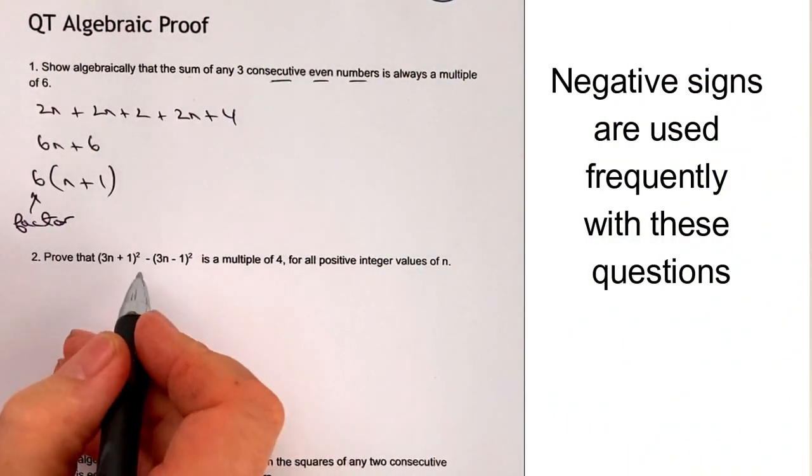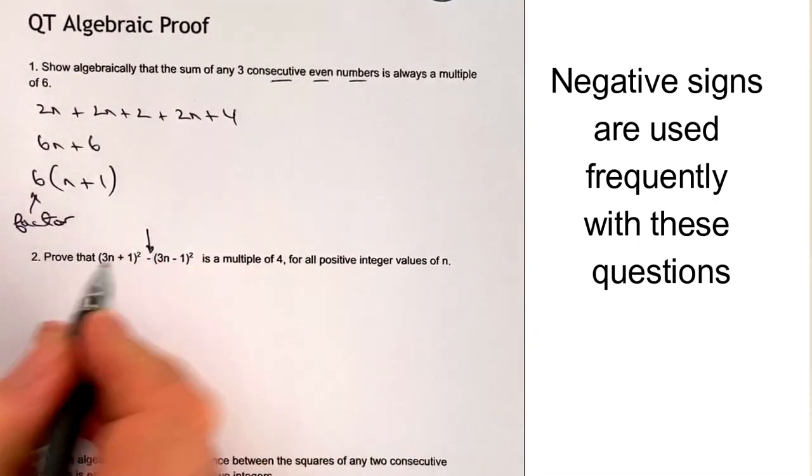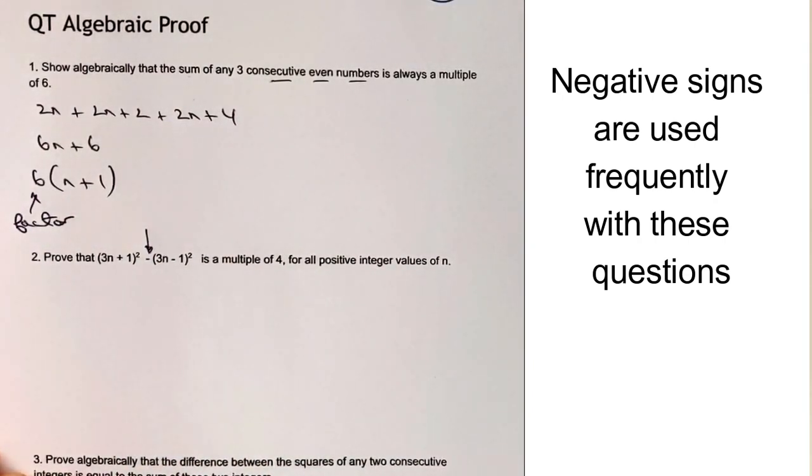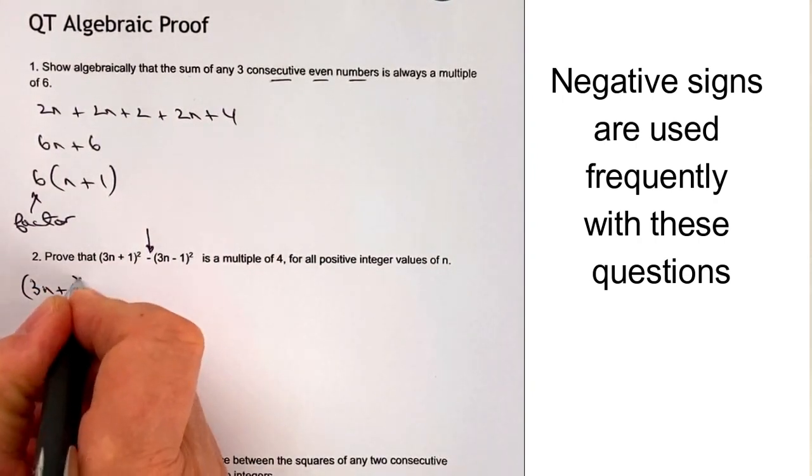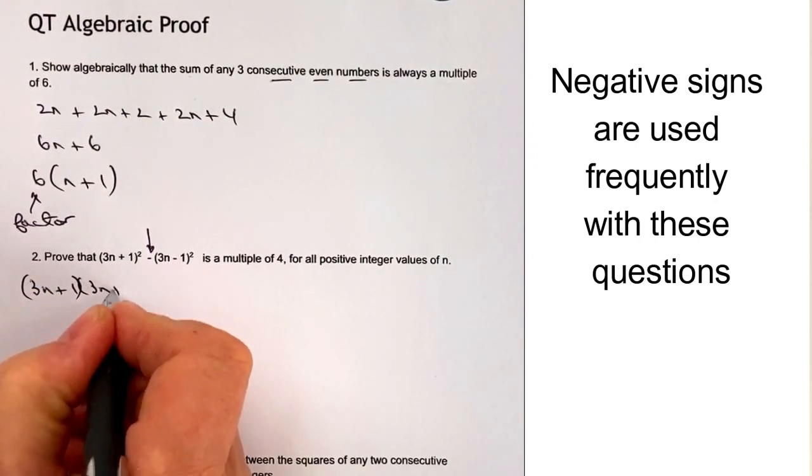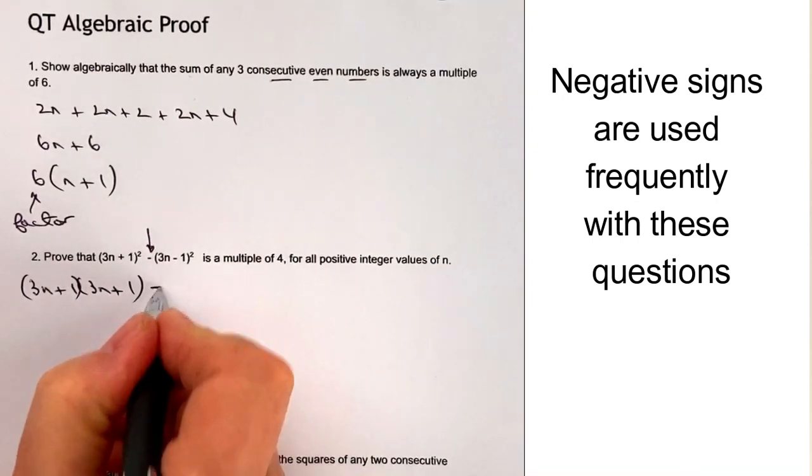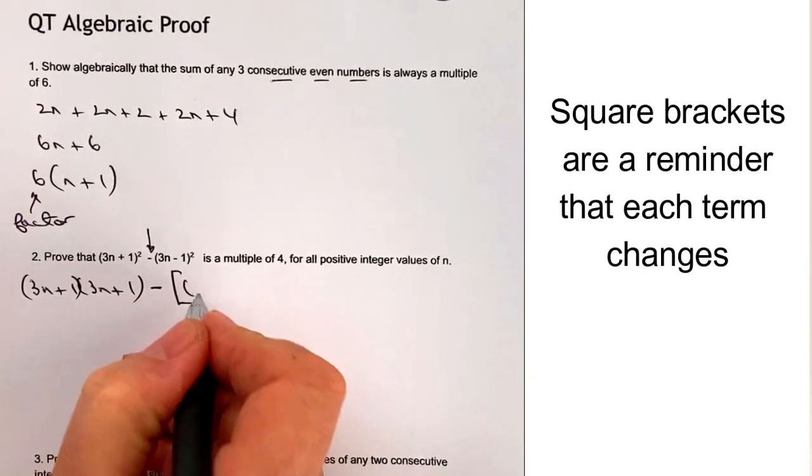And this is where it gets a little bit trickier because of this negative sign in the middle. So when we're working with negative, we need to be very careful. We've got 3n plus 1, and that's going to be squared, so 3n plus 1. And then we're going to minus, so I'm going to put some big square brackets in there.